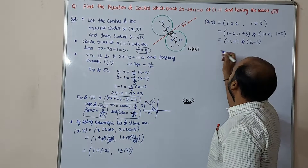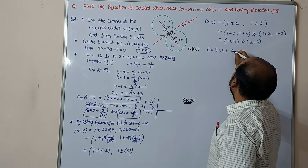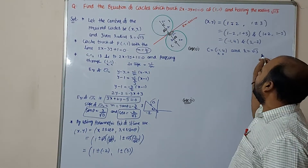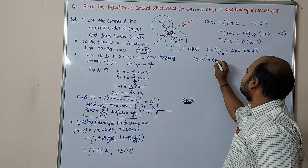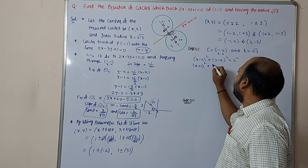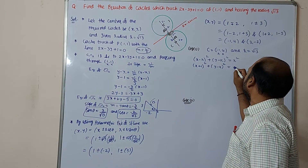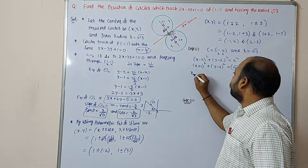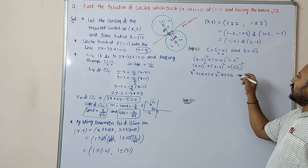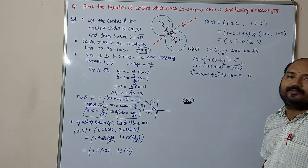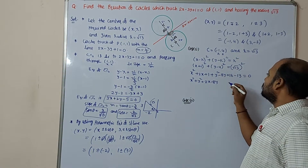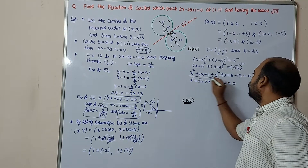Case 1: center c equals (minus 1, 4) and radius r equals root 13. Using the standard equation (x minus h)² plus (y minus k)² equals r²: (x plus 1)² plus (y minus 4)² equals 13. Expanding: x² plus 2x plus 1 plus y² minus 8y plus 16 minus 13 equals 0, giving x² plus y² plus 2x minus 8y plus 4 equals 0. This is one of the required circles.